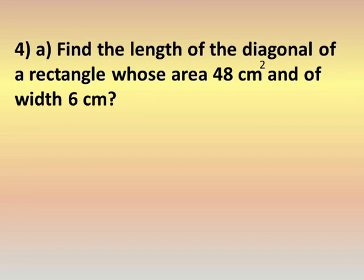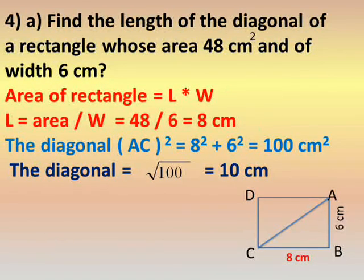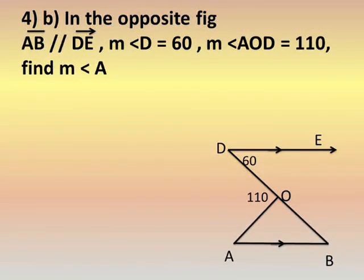Number four A: find the length of the diagonal of a rectangle whose area is 48 cm² and width is 6 cm. We draw rectangle ABCD with width 6 and area 48. Area of a rectangle equals length times width, so length equals area divided by width: 48 divided by 6 equals 8 cm. Now for the diagonal AC, triangle ABC is a right angle triangle, so by Pythagoras: AC² equals BC² plus AB² equals 8² plus 6², giving 100. Therefore AC equals square root of 100, which is 10 cm.